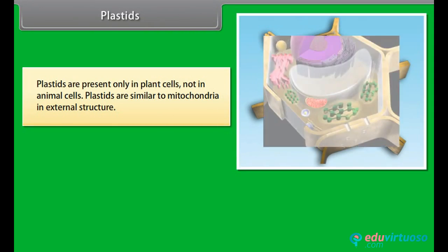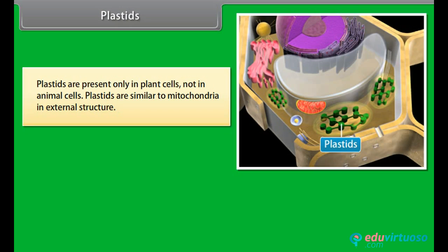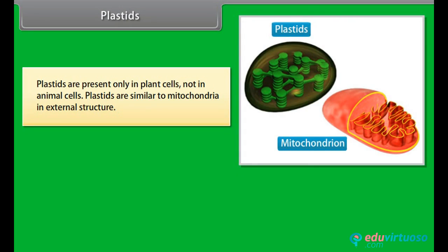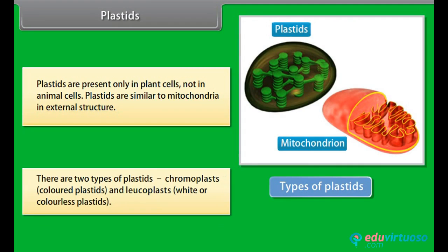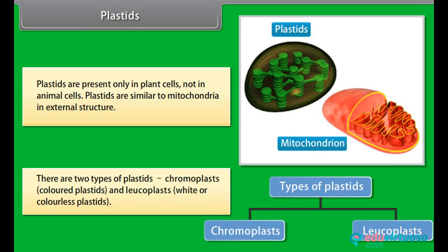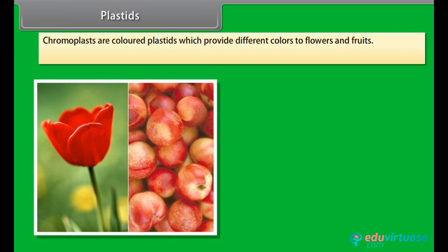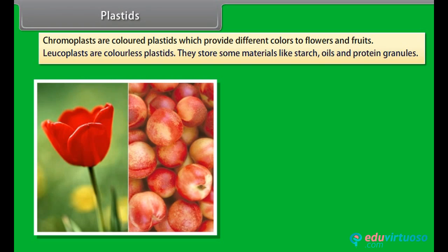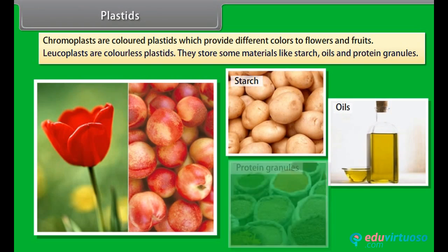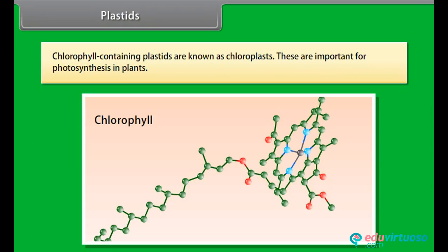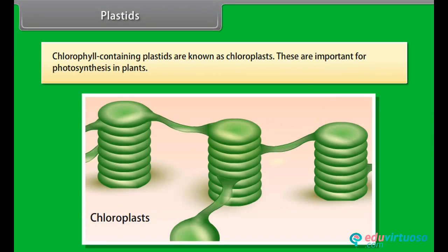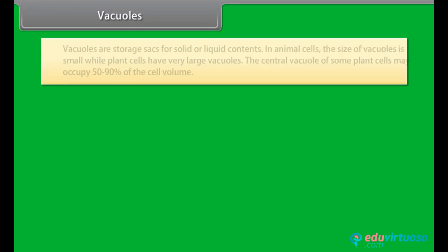Plastids are present only in plant cells, not in animal cells, and are similar to mitochondria in external structure. There are two types of plastids: chromoplasts (colored plastids) and leukoplasts (white or colorless plastids). Chromoplasts provide different colors to flowers and fruits. Leukoplasts are colorless plastids that store materials like starch, oils and protein granules. Chlorophyll-containing plastids are known as chloroplasts, which are important for photosynthesis in plants.